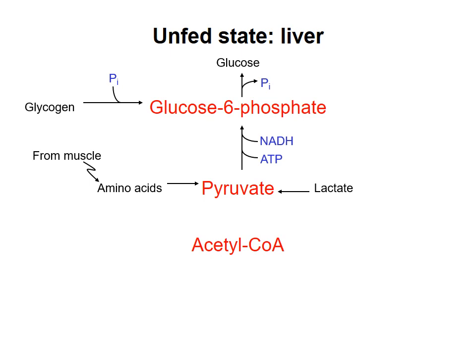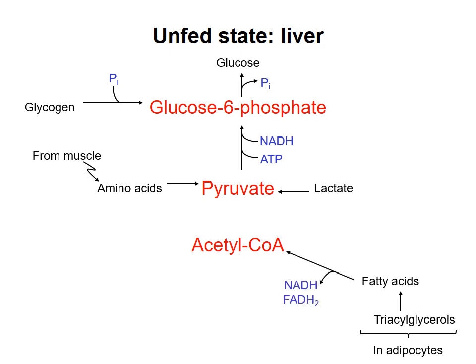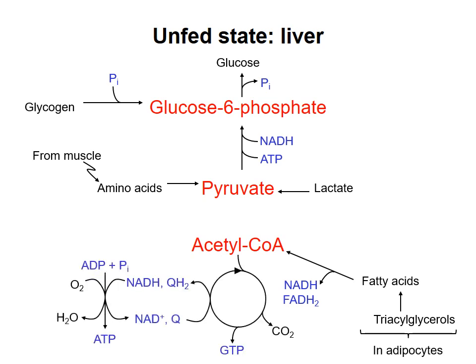While the liver is producing glucose for export to the blood, it gets its own energy from fatty acids released from triacylglycerol storage. These fatty acids are broken down to acetyl-CoA by beta-oxidation, and the acetyl-CoA enters the citric acid cycle to fuel ATP synthesis by oxidative phosphorylation. Some amino acids from protein degradation can also be used to make citric acid cycle intermediates. The body cannot continue to consume muscle proteins to provide energy to the brain forever, because nitrogen becomes depleted, and because some muscle protein is necessary for the body to live. As time passes, the liver will gradually increase its conversion of some acetyl-CoA to ketone bodies.